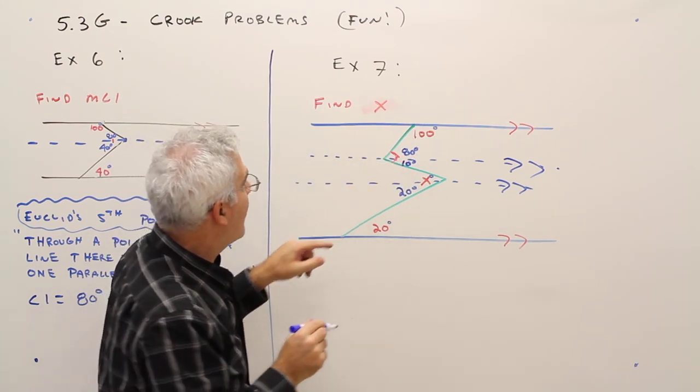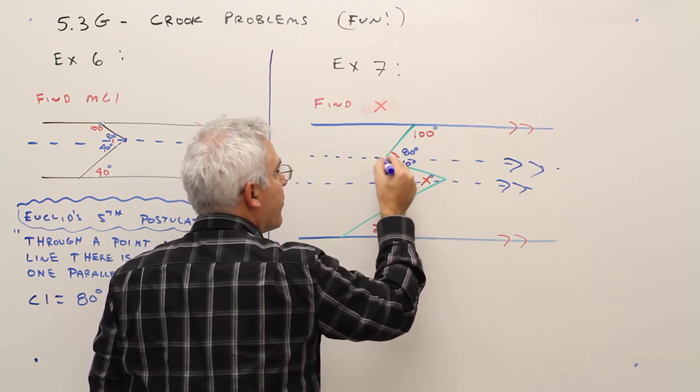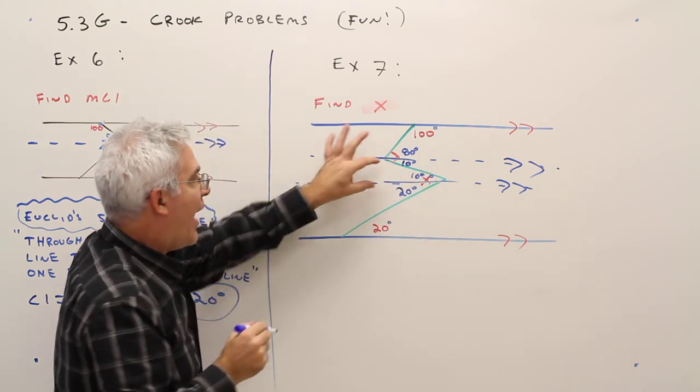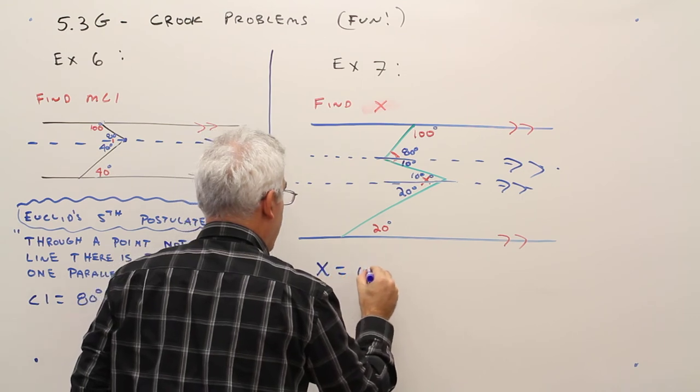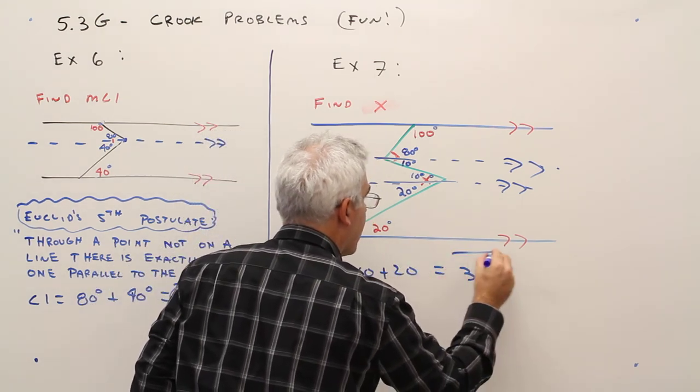Well, if that's 10 there, then I know it's going to be 10 degrees over here, because I've got alternate interior angles. Well, then x is going to be 10 plus 20. So x equals 10 plus 20 equals 30 or 30 degrees.